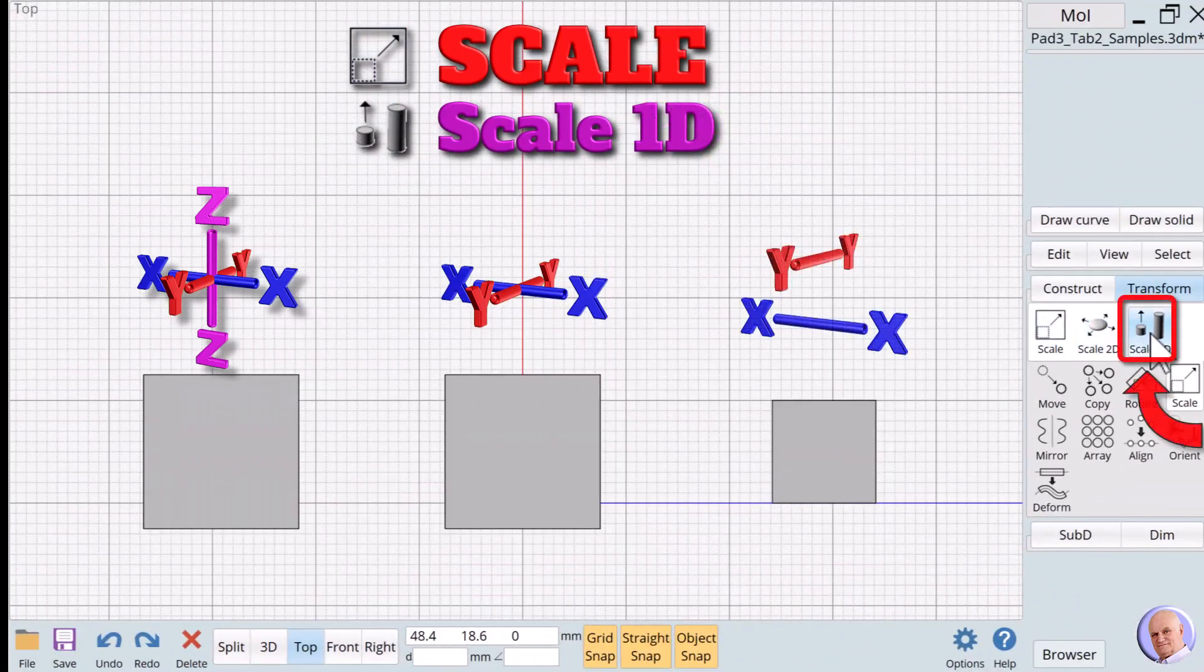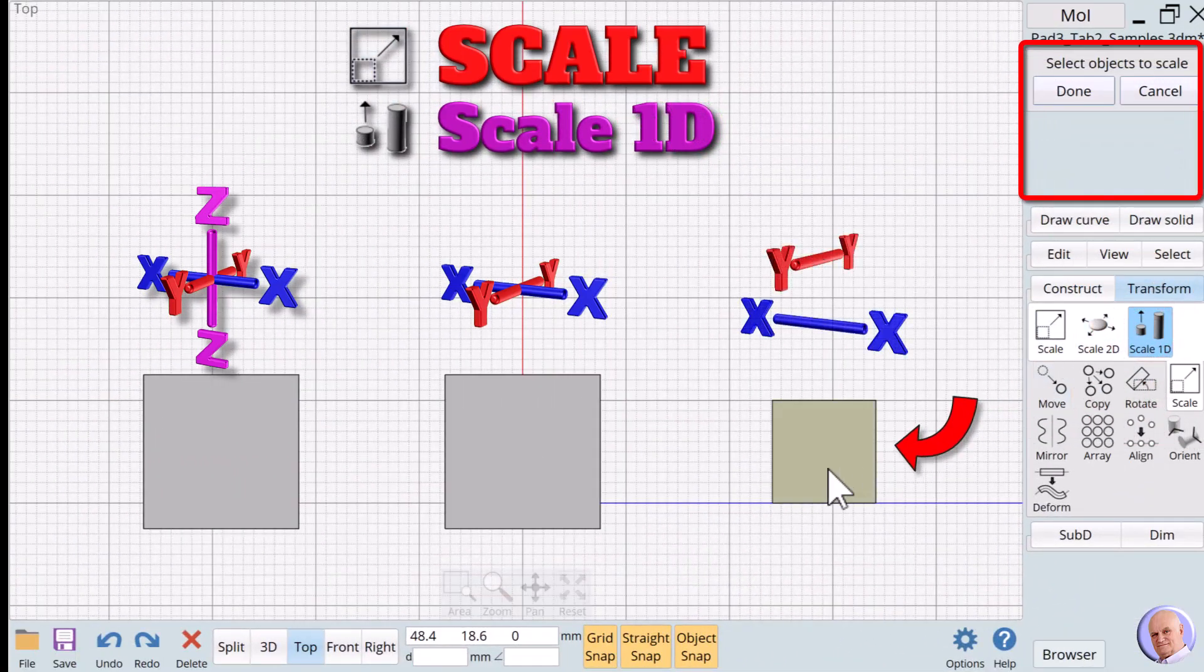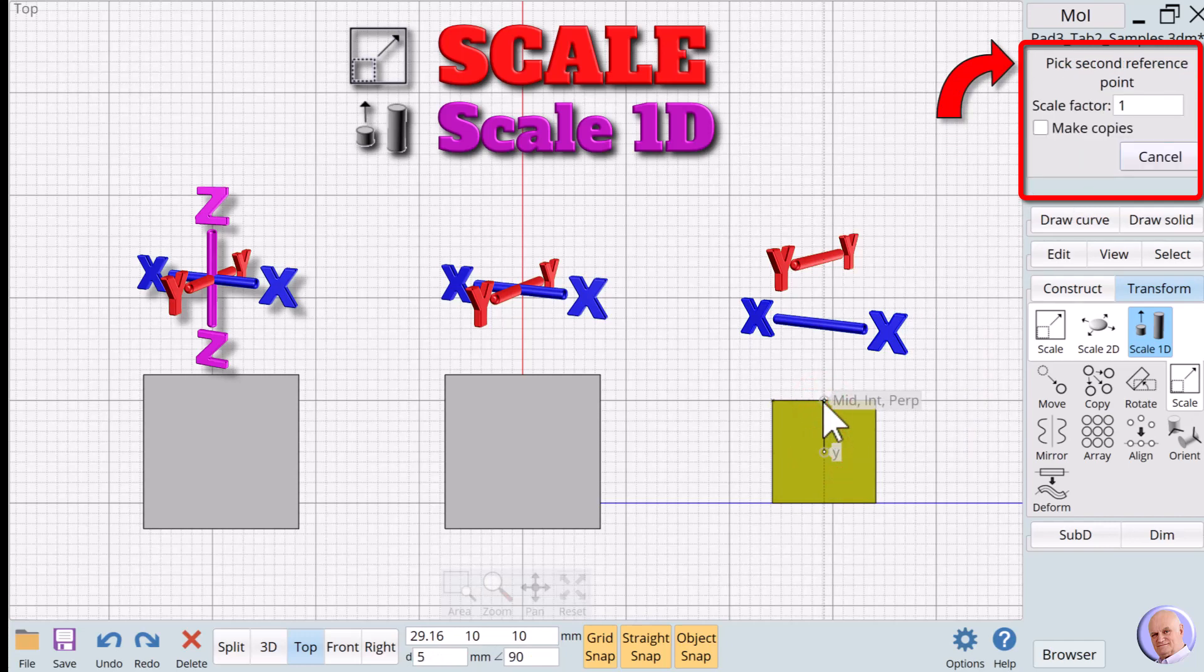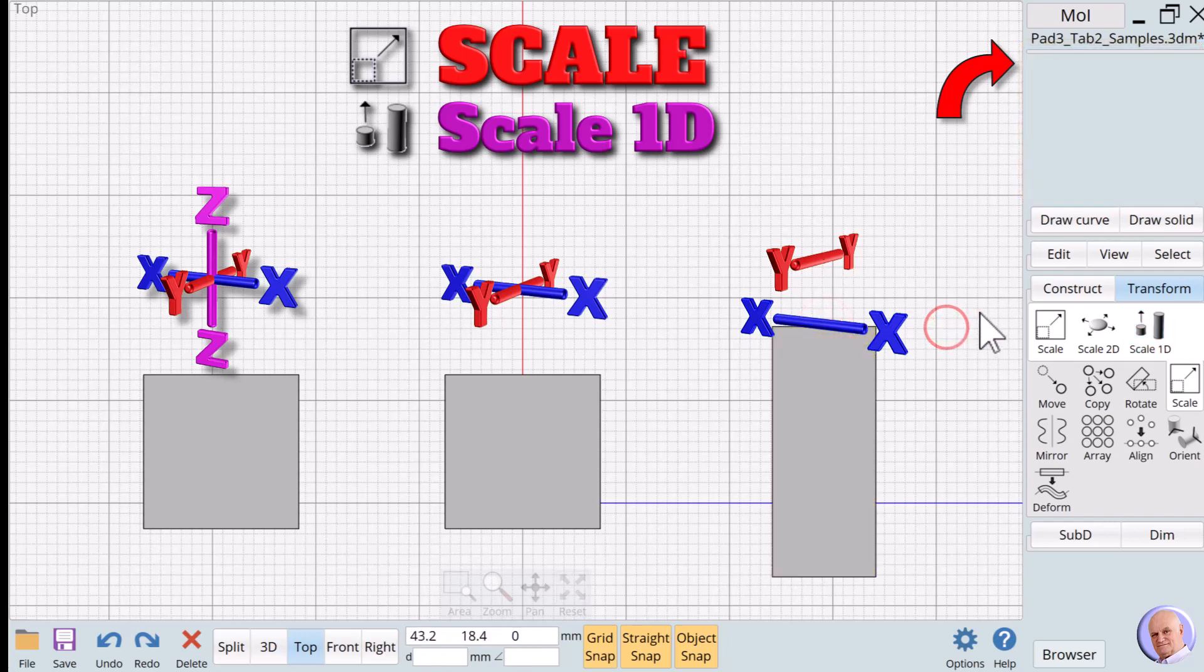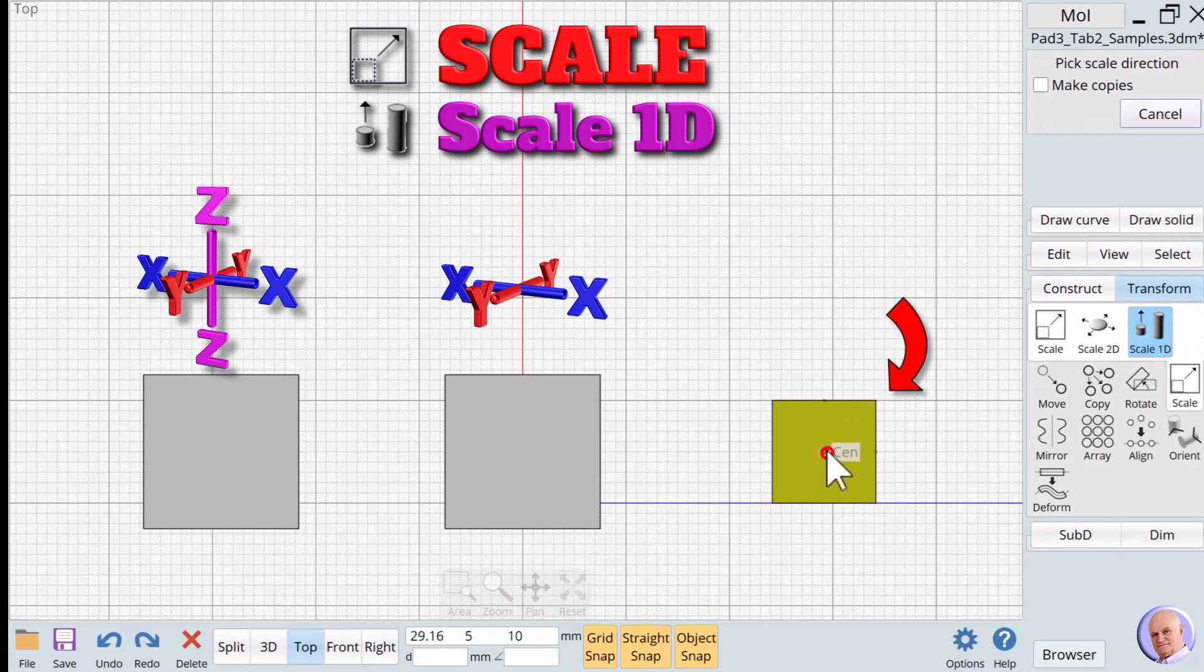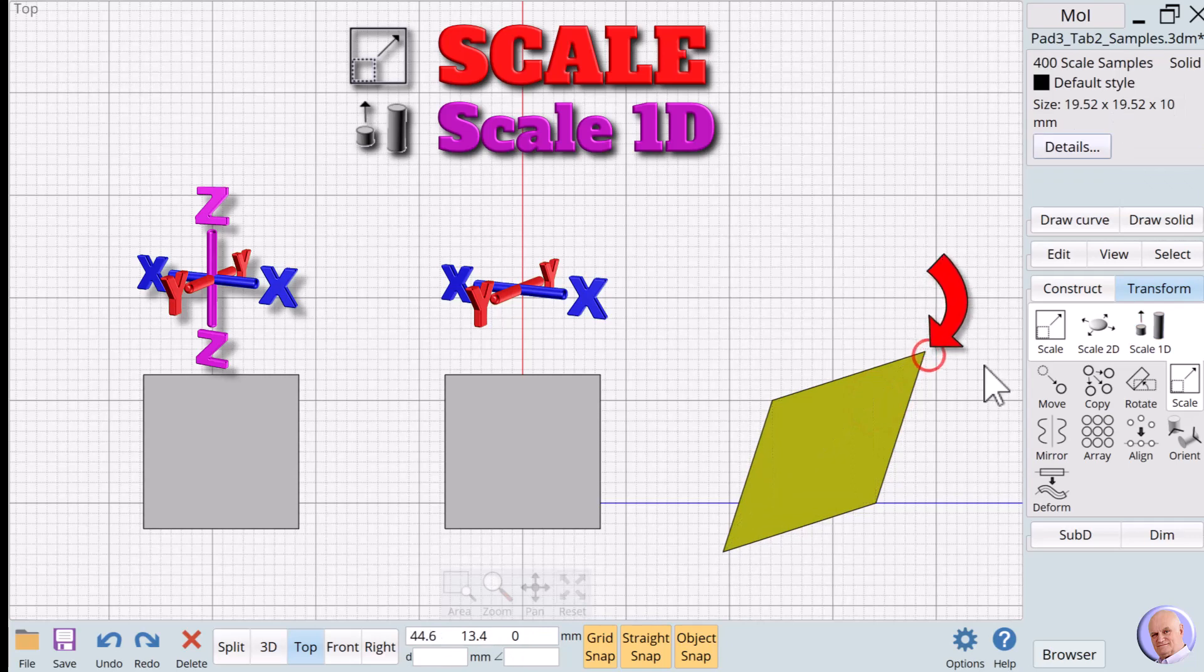Scale 1D. This option limits the scaling to one direction. This time after picking the origin point, the prompt says to pick a direction. We usually use an X, Y, or Z axis direction. But, we'll undo to show that any direction can be used. How you scale a design after seeing the first print of an object is relatively common when first learning 3D design and printing. But, as you can see, it's a very easy verb to use when needed.